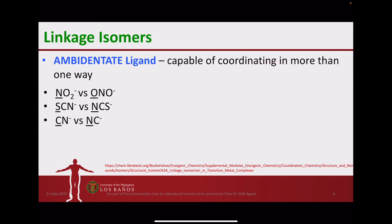For the nitrite ion, it can bind to the metal through nitrogen or through one of the oxygens. For the thiocyanate ion, it can bind through the sulfur or the nitrogen. And for the cyanide ion, it can combine through carbon or nitrogen.